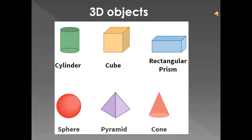Now we're going to have a look at 3D objects. The keywords: three-dimensional objects, or 3D objects, are objects that have length, width, and height. In the first term you learned about 2D shapes — they are flat and only have two dimensions: length and width. An object that has three dimensions — length, width, and height — is called a three-dimensional object, or a 3D object for short.